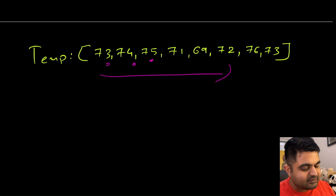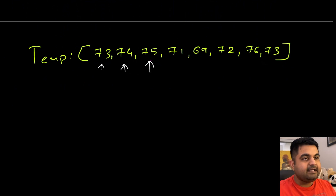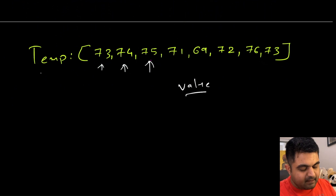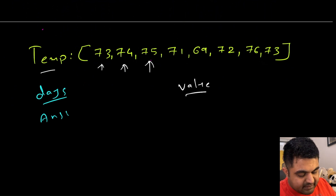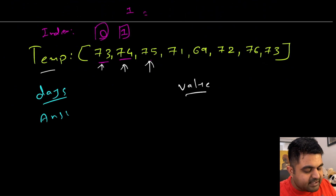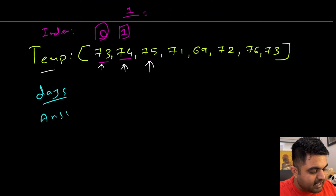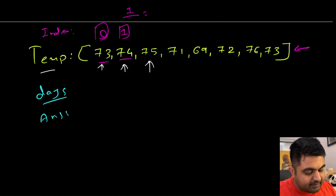Now, how we use the stack is quite interesting. We use the temperature to compare values, but in the answer we need to store how many days are apart — which we find using the index values. At index 0 we have 73, and at index 1 we have 74, so index 0 is one day away since 1 minus 0 equals 1. Therefore, it makes more sense to store index positions in the stack rather than the actual values, since we can look up values quickly using those indices.